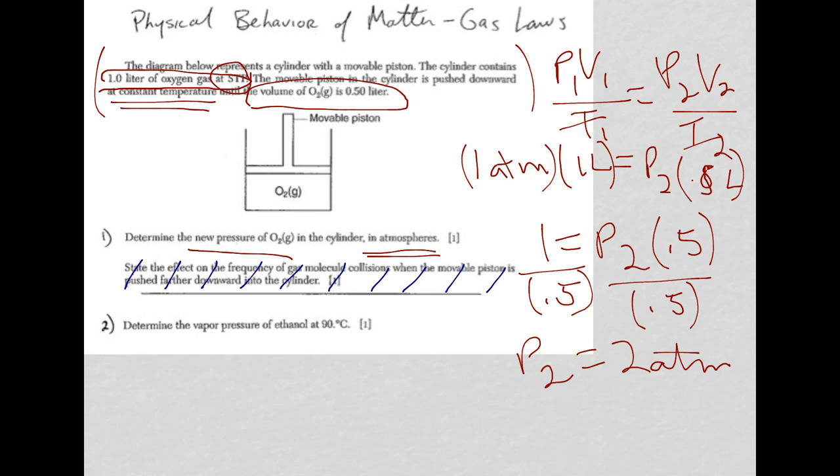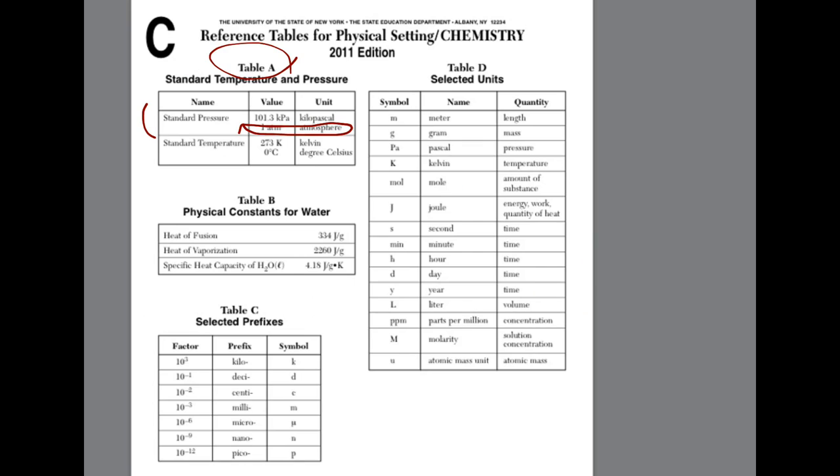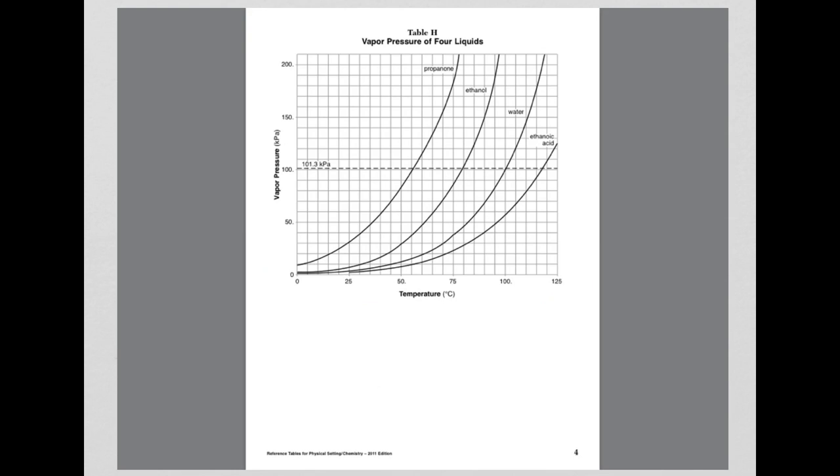In number 2, you're asked to determine the vapor pressure for ethanol at 90. Well, for vapor pressure, we have a vapor pressure diagram, meaning a reference table. And here it is, reference table H.